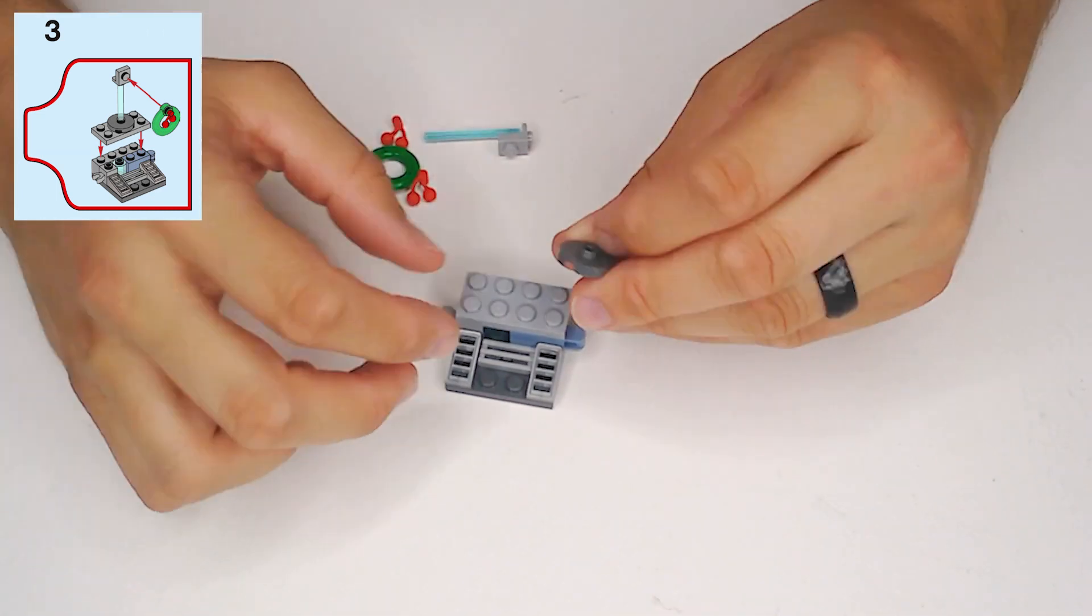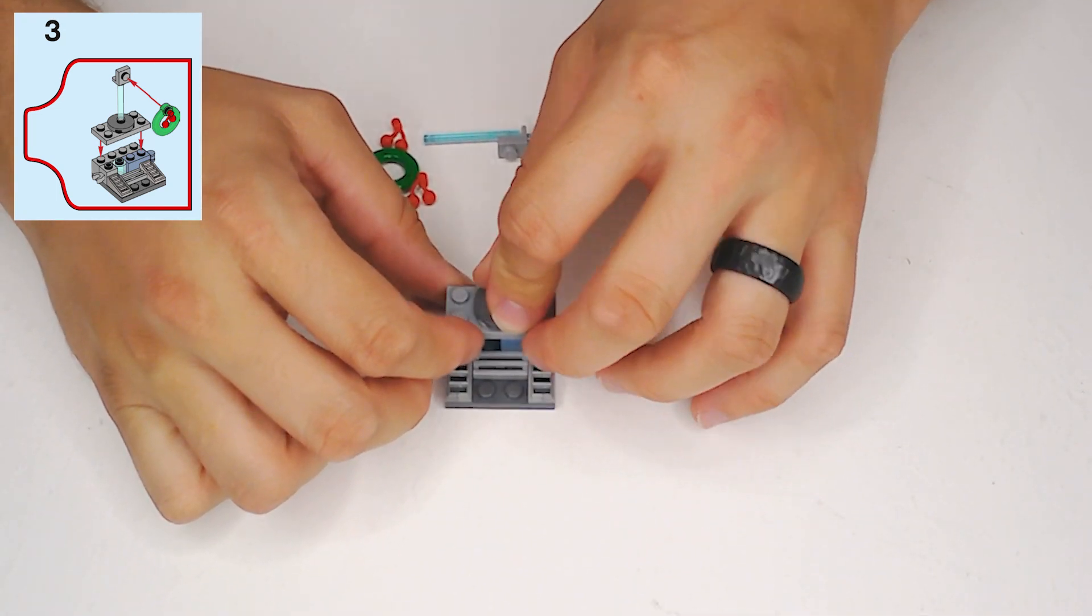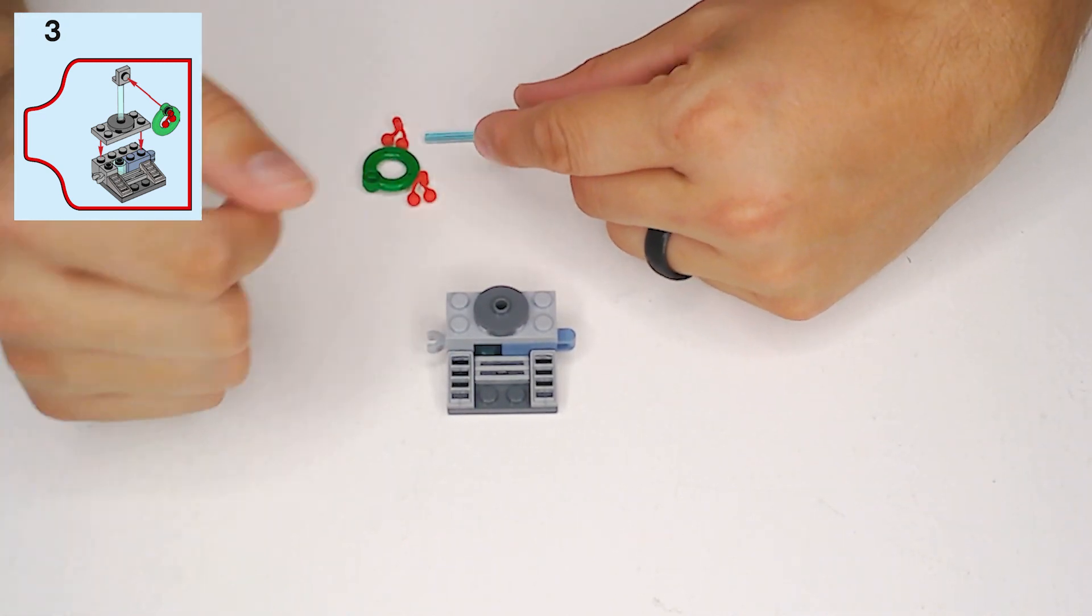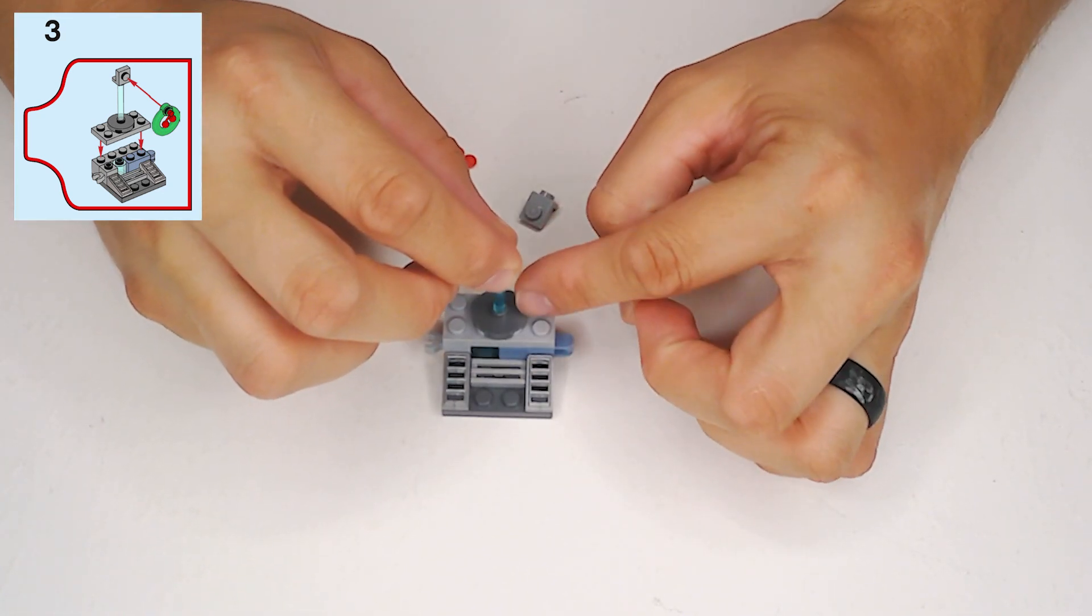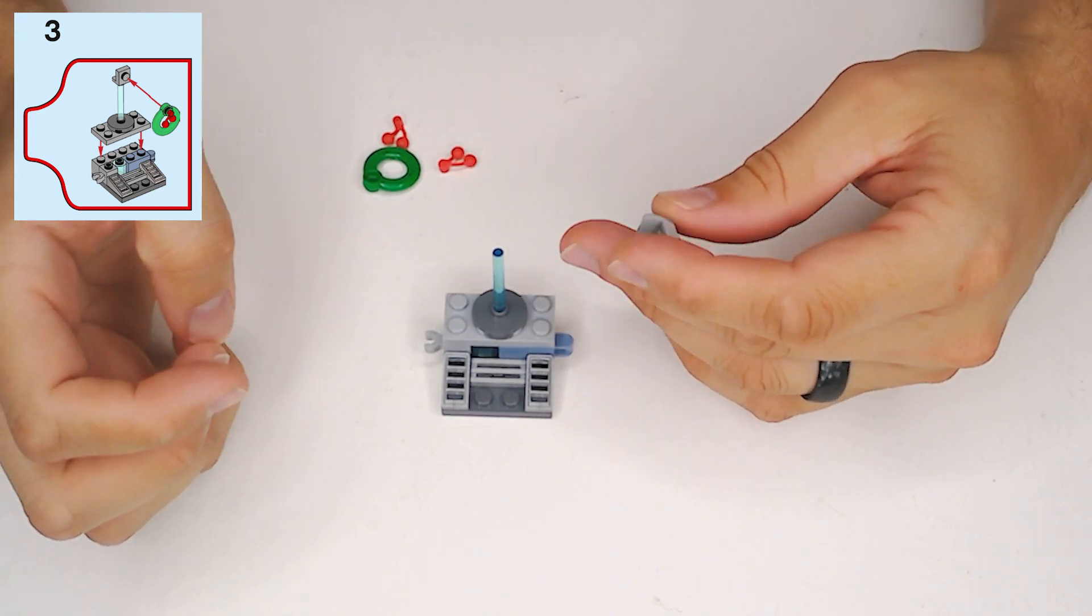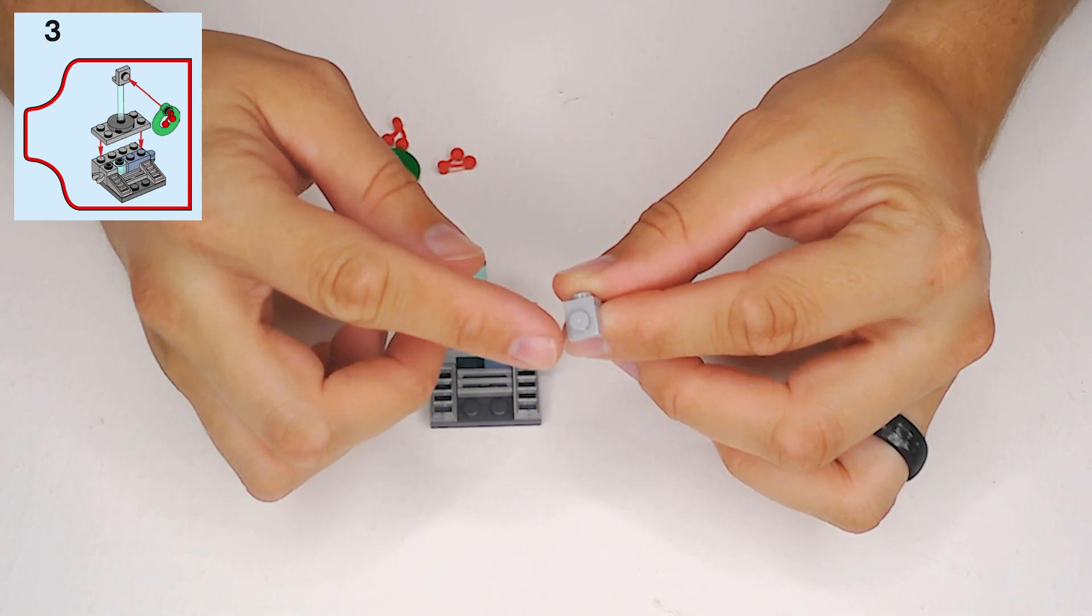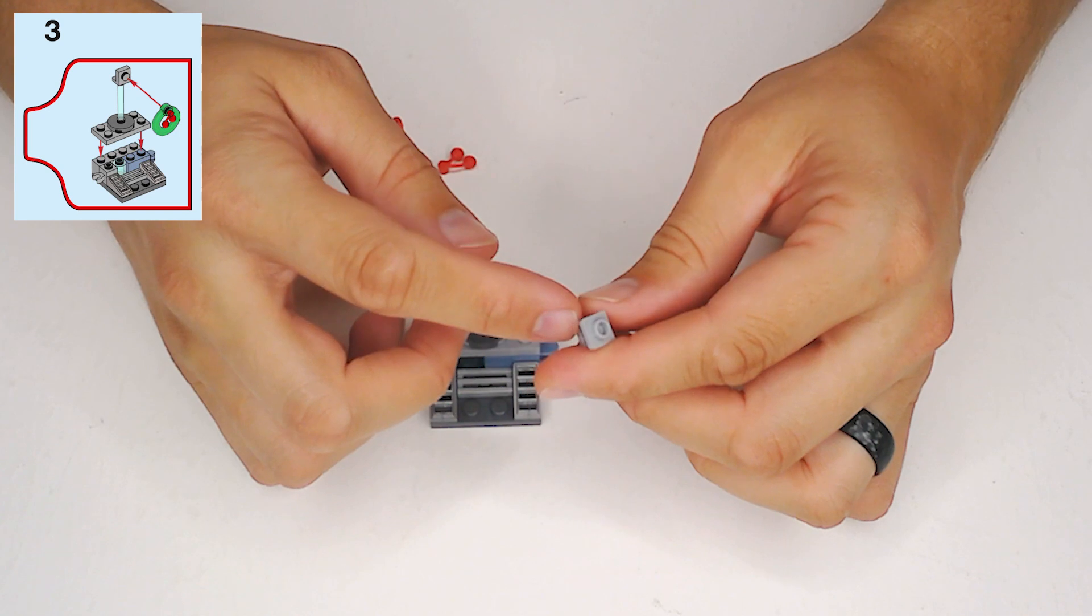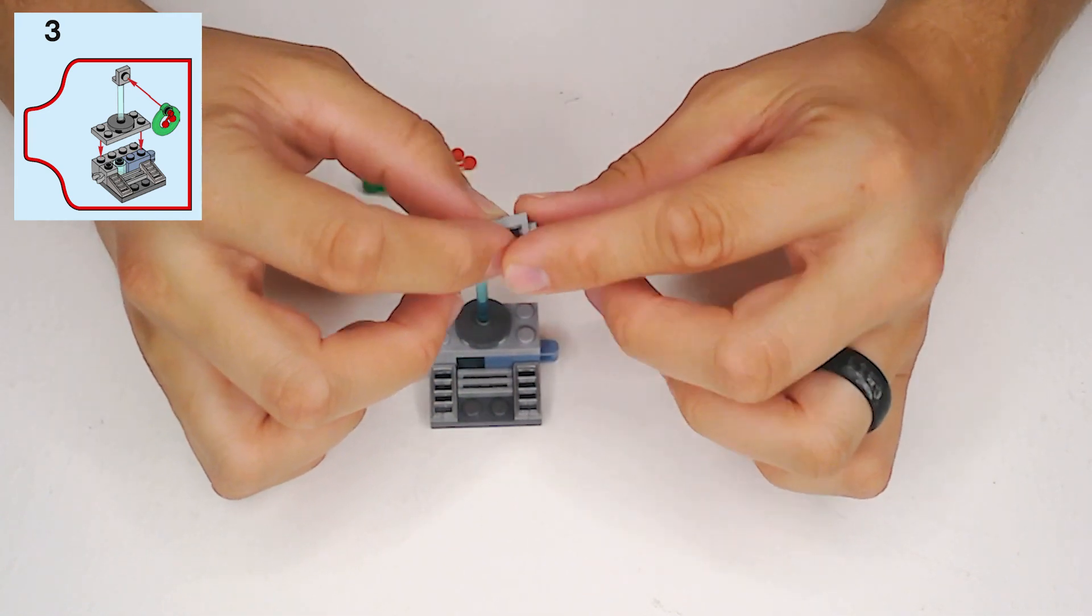And then we need this dark gray 2x2 round offset plate. It's going to go right in the center of that 2x4. And then this transparent blue pole going right into the center of that offset plate. And then we have this little lightweight piece. It's a 1x1 length square up plate with a side facing stud on the tab and down.